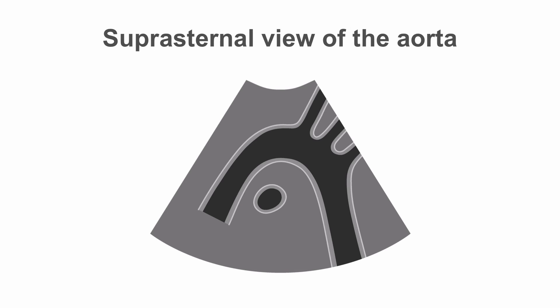This is a diagram of the suprasternal view of the aorta. The probe is at the top of the screen. We're looking at the ascending aorta, the arch itself, and then the descending aorta. We also get the head and neck vessels: the first one is the innominate, which some people call the brachiocephalic artery, then we have the left common carotid, and then the left subclavian.